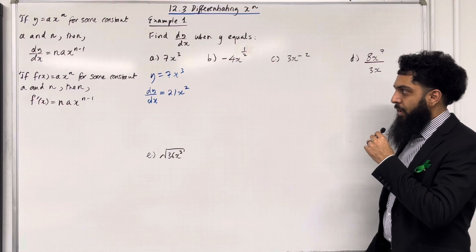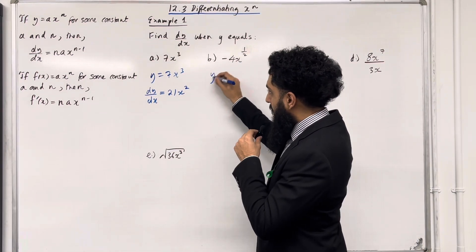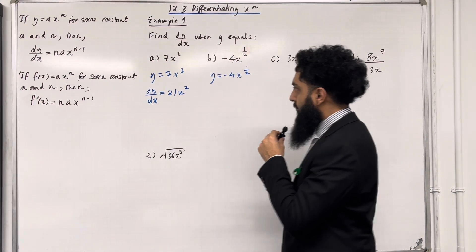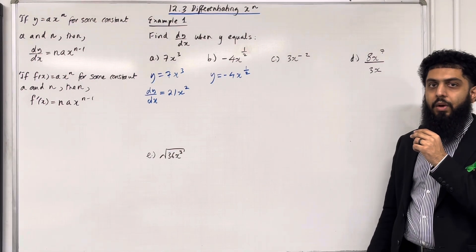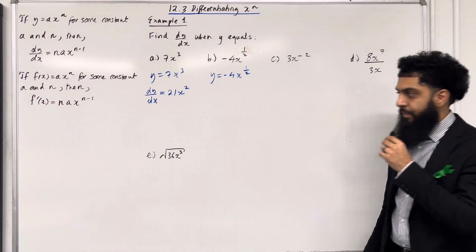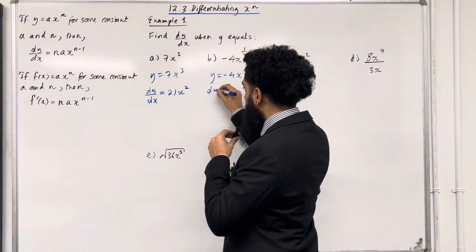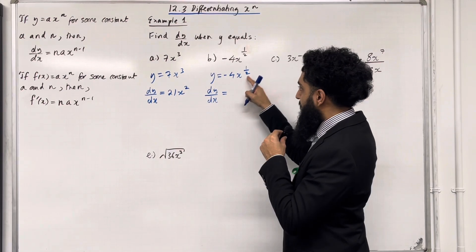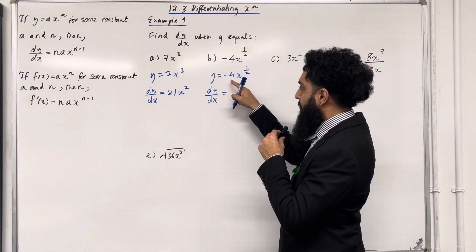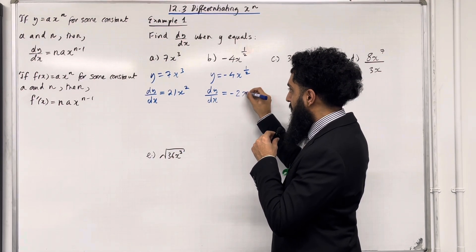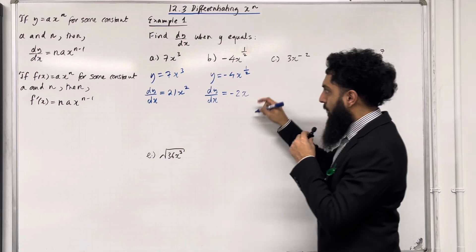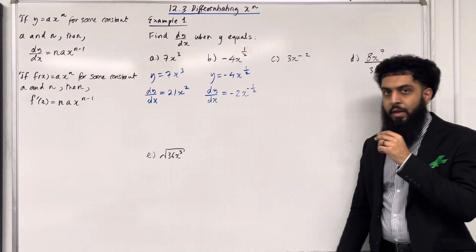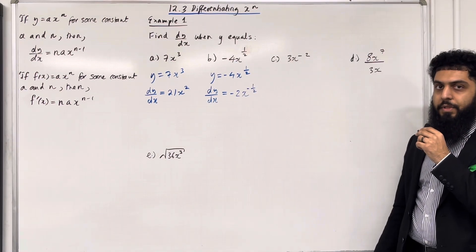Let's have a look at part B. We've got y equal minus 4x to the power a half. We want to work out dy over dx. So dy over dx equals — bring down the power: a half times minus 4 is minus 2, x to the power a half minus 1, which is minus a half. This completes part B.